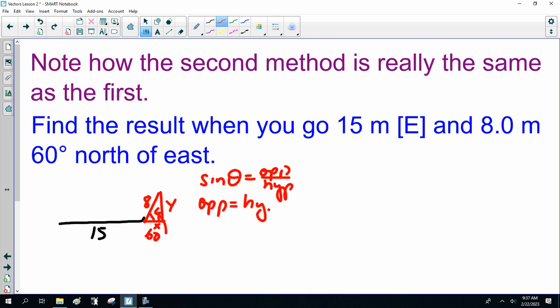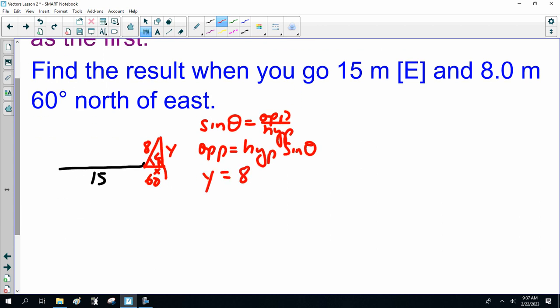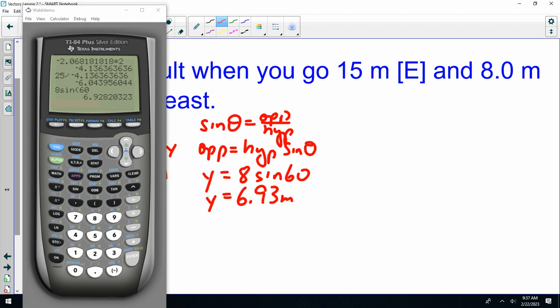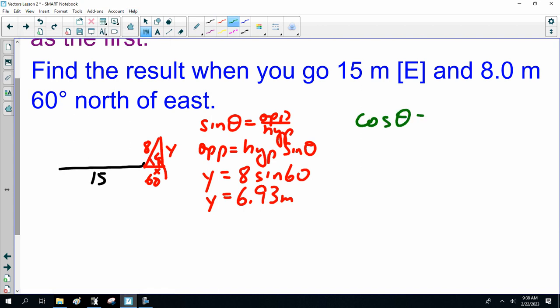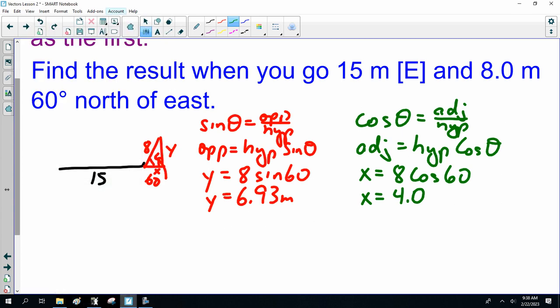Sin theta is opposite over hypotenuse, so opposite is hypotenuse times sin theta. In this drawing, the opposite is the y side, so that is 8 sin 60, which equals 6.93 meters. Cosine theta is adjacent over hypotenuse, so adjacent is hypotenuse times cos theta. In this drawing, the adjacent is the x side, so 8 cos 60, that should be 4.0.